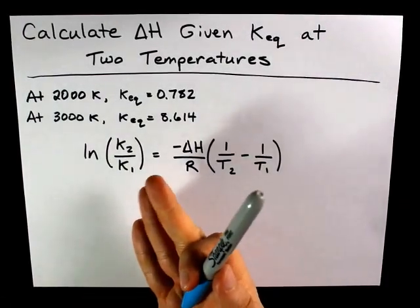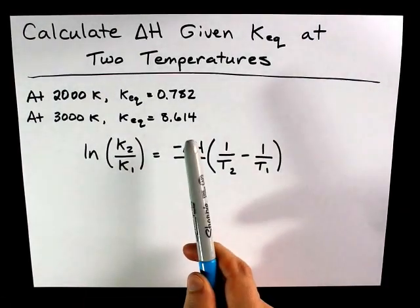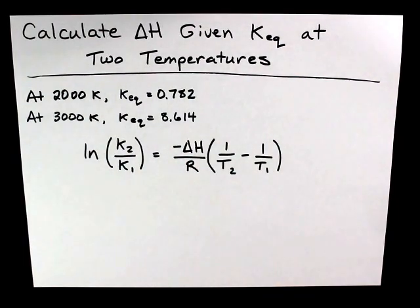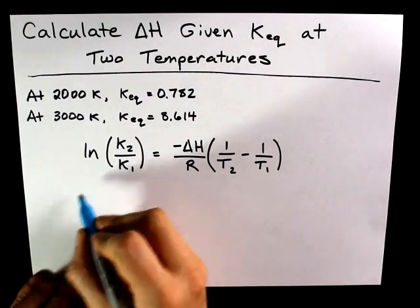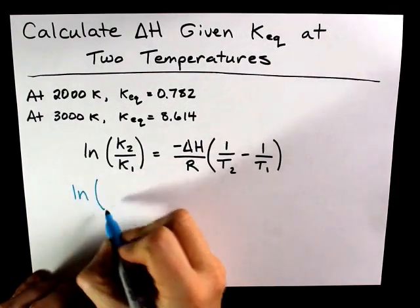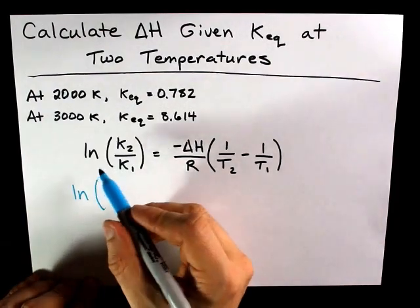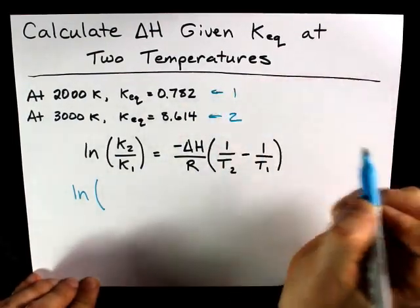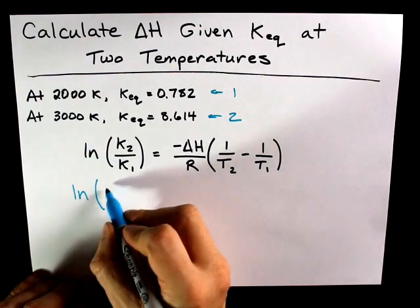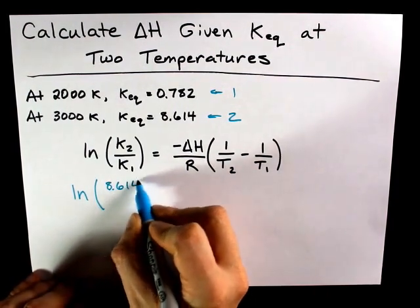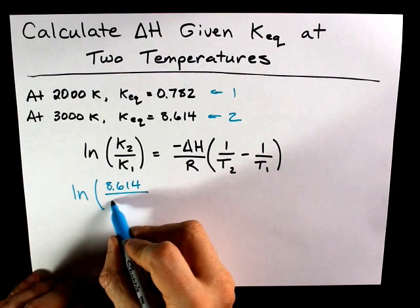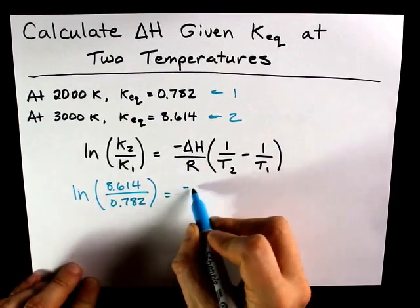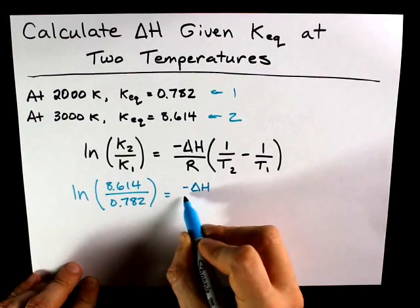So let's begin. If we want to solve for delta H, we just need to plug in these numbers and then isolate it. Let's take the natural logarithm, I call it the lon, of k2. I'm going to make this data set 2 and I'm going to make this data set 1. So k2 is 8.614. k1 is 0.782.